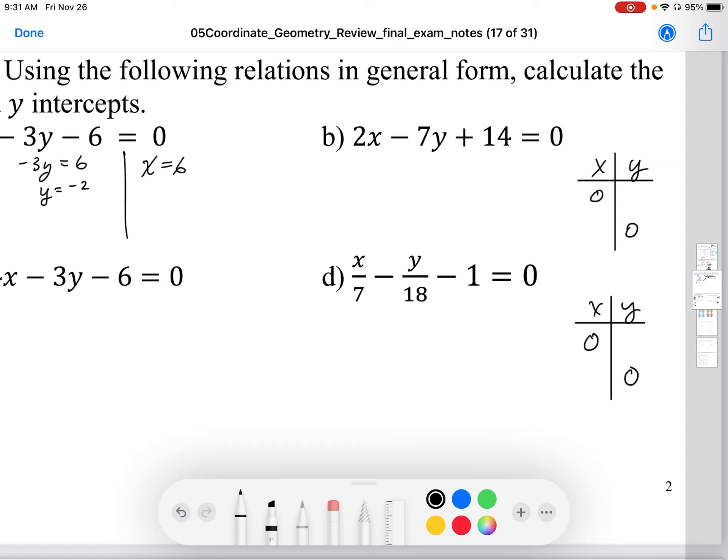So here, the y intercept is going to be x is 0, so I get negative 7y. Subtract 14 from both sides, I get y equals positive 2. And again, I'll do the same thing for y. I'm going to plug in y is 0, subtract 14 from both sides, and I get x is negative 7.